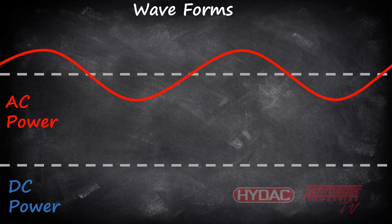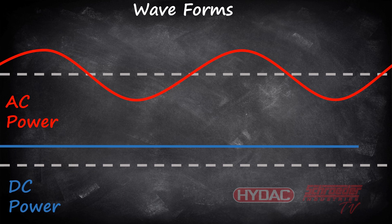Direct current DC is the constant flow of electric charge in one direction. Batteries generate direct current to power handheld items mostly. Most electronics use direct current for internal power, often converting alternating current AC to DC using a transformer.